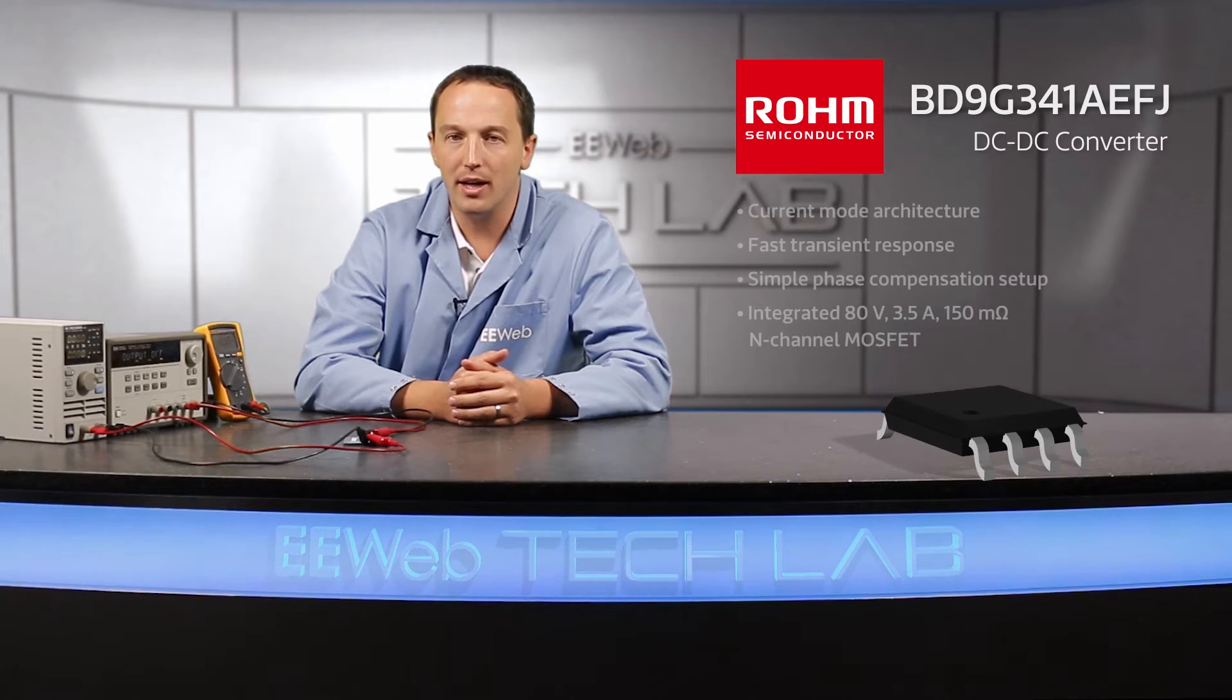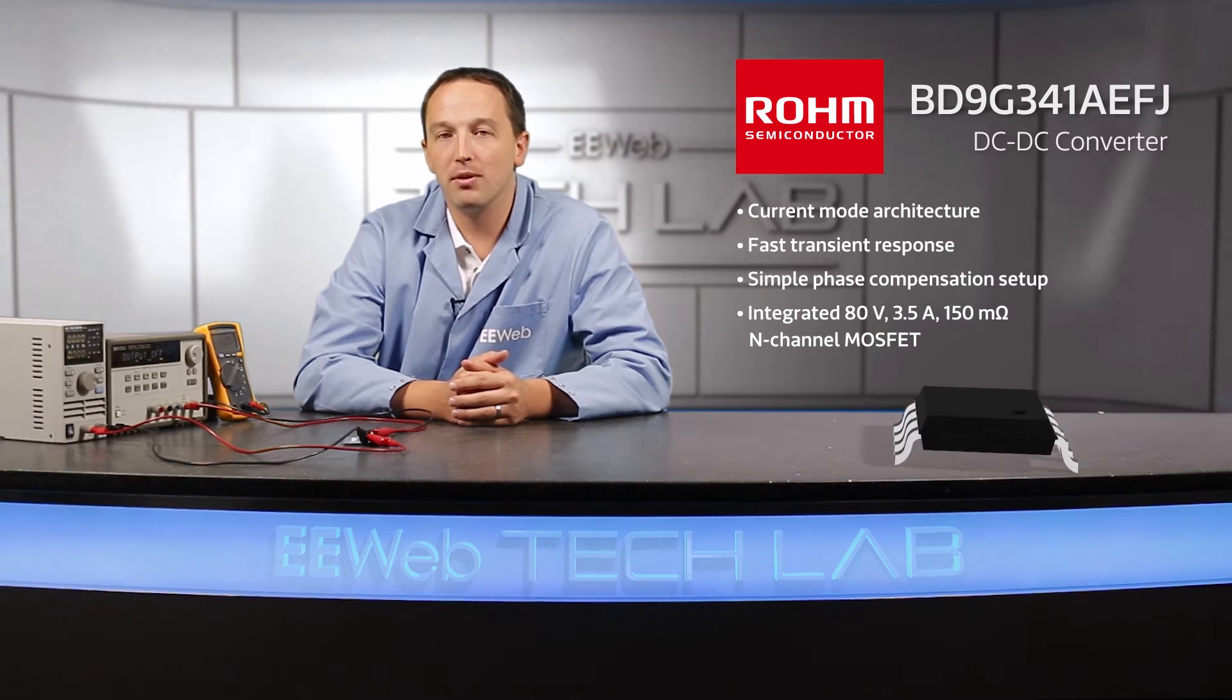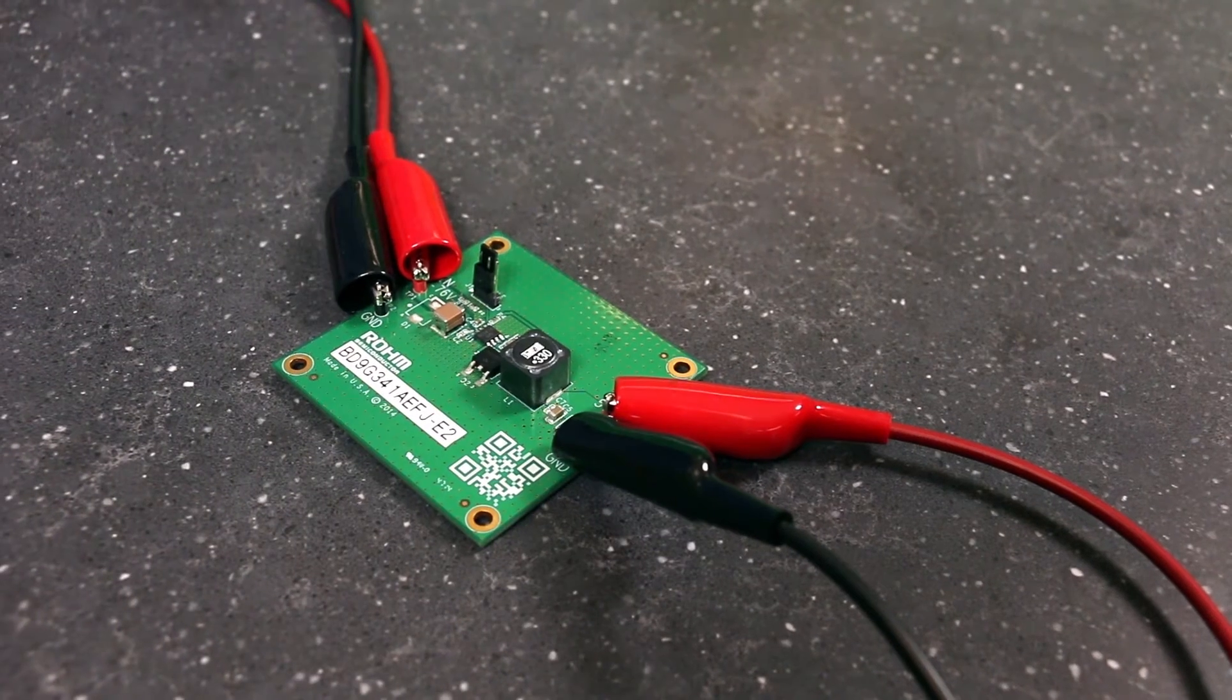The BD9G341AEFJ implements a current mode architecture, providing fast transient response and simple phase compensation setup. Design is further simplified by integrating an 80-volt, 3.5-amp, 150-milliohm N-channel MOSFET.